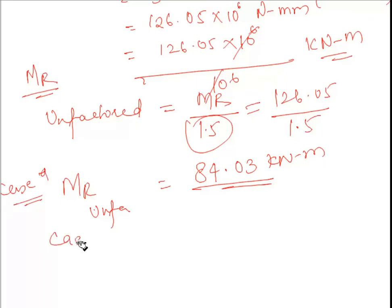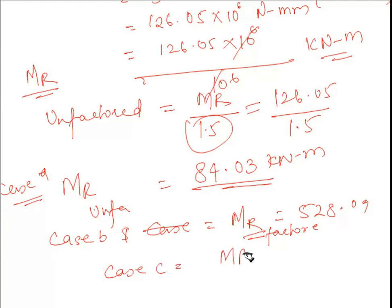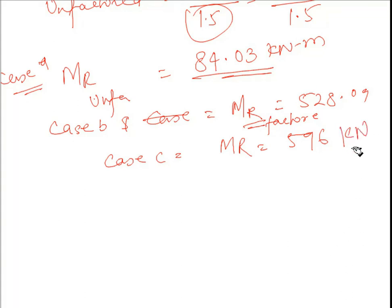Similarly for Cases B and C, using the same formula and procedure: for Case B, MR = 528.09 kN·m (factored); for Case C, MR = 596 kN·m (factored). These are all factored moments of resistance. You can calculate the unfactored values by dividing by 1.5.